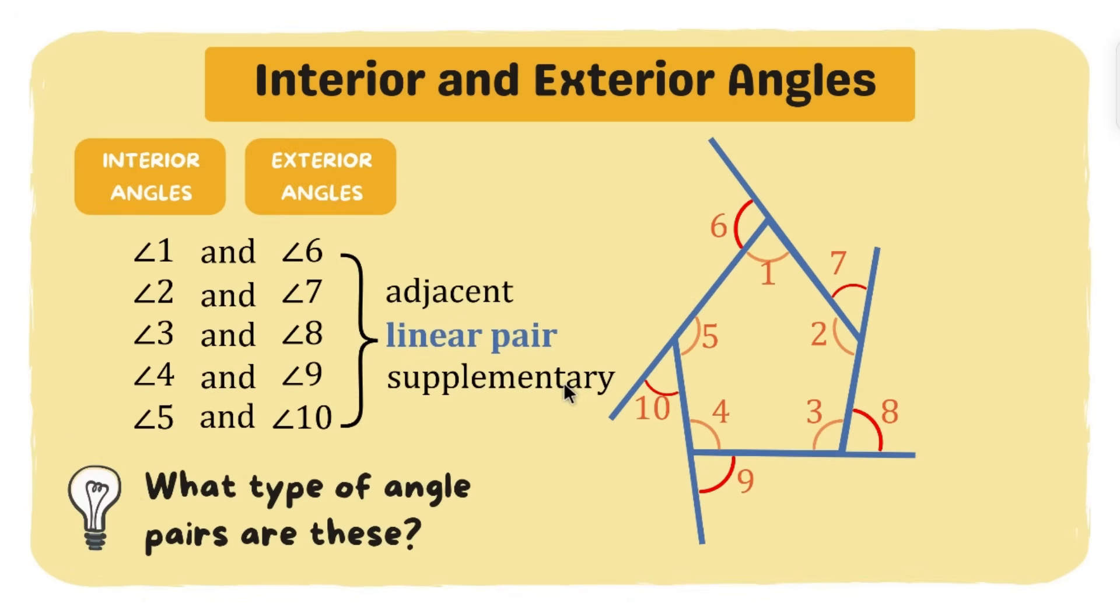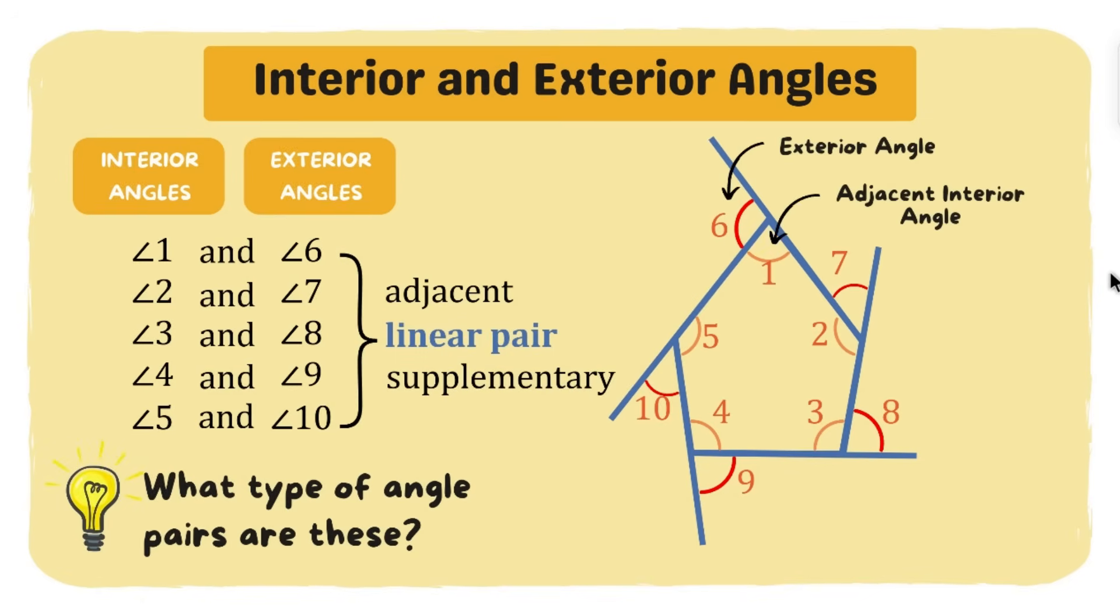Now class, take note of these terms. Angle 6 here is called the exterior angle, and angle 1 here will be called the adjacent interior angle because it is adjacent to angle 6 and it is an interior angle.